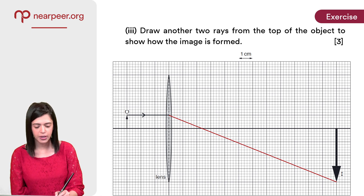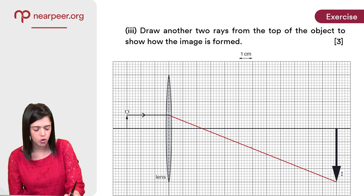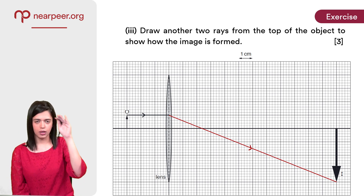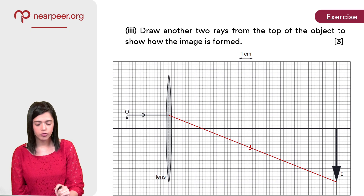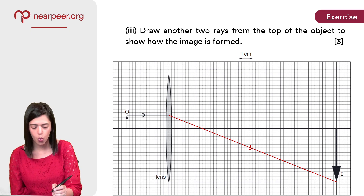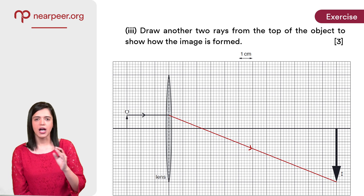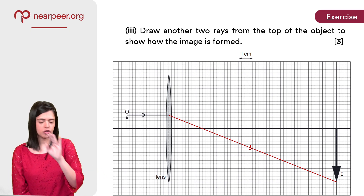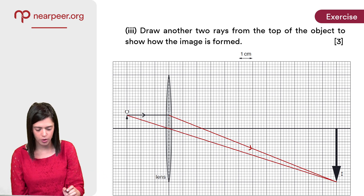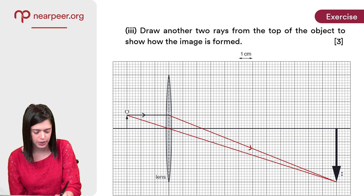Now draw two more rays from the top of the object to show how the image is formed. Let's start with the easiest option: any ray that passes through the optical center just goes straight ahead with no bending.